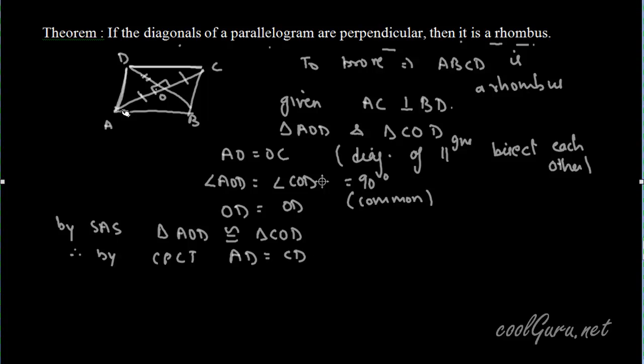But as ABCD is a parallelogram, we know that in a parallelogram opposite sides are equal. Therefore AB is equal to CD and BC is equal to AD because this figure is a parallelogram. So by this, we can say that AB is equal to CD is equal to AD is equal to BC.